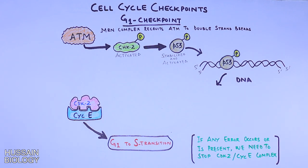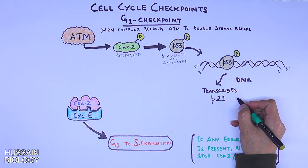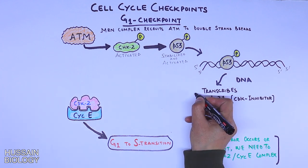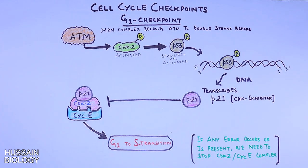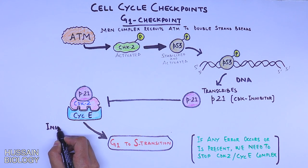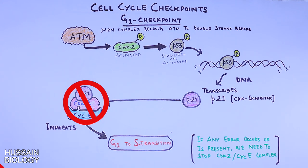The activated p53 binds to DNA and acts as a transcription factor for several genes. One important gene transcribed is p21. p21 is a CDK inhibitor — it binds to CDK2 and inhibits the CDK2–cyclin E complex. This halts the G1-to-S phase transition, allowing the checkpoint to stop progression until the DNA repair mechanisms fix all errors within the DNA.